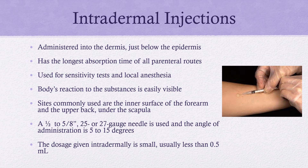Intradermal injections have the slowest absorption rate. This is why TB tests and allergy testing are performed this way — we don't want the patient to absorb those quickly, as rapid absorption could cause a systemic reaction. It's important to get these right under the dermis. The maximum amount you will give is 0.5 mL, and most of the time it's even less. All of the medication goes into a tiny wheal just under the skin, and having the bevel up for this injection specifically allows for that little bleb you see when you get TB testing.